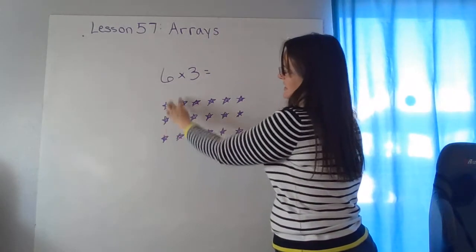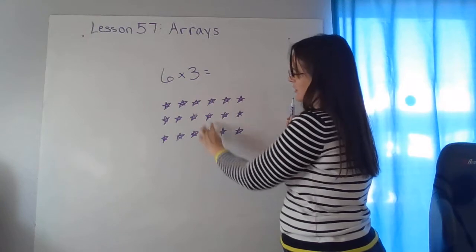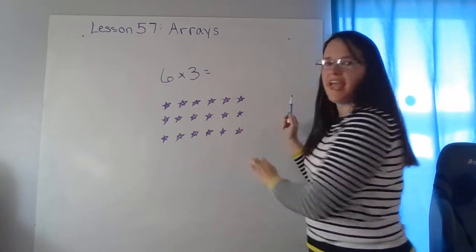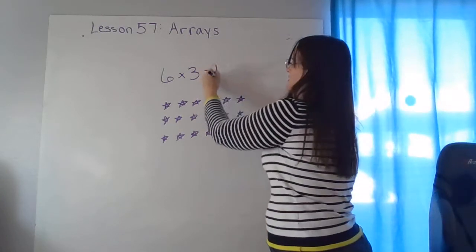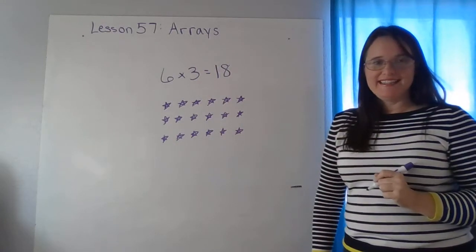Three, six, nine, twelve, fifteen, eighteen. So six times three equals eighteen.